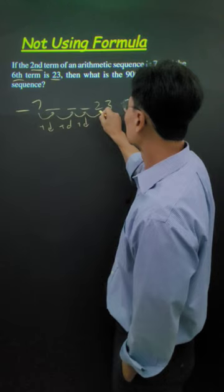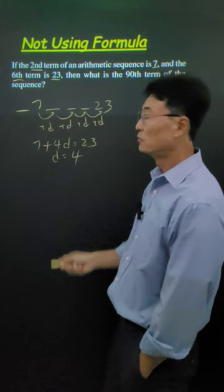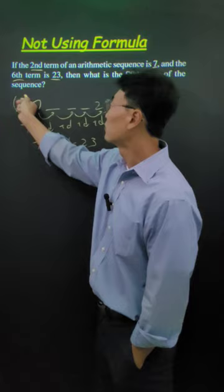Here, we have 7 plus 4d is equal to 23, where d is equal to 4. Then, if we add 4 from the first to the second, it means that the first term is 3.